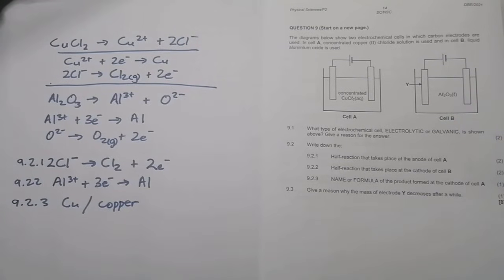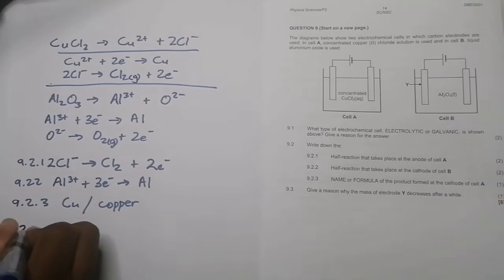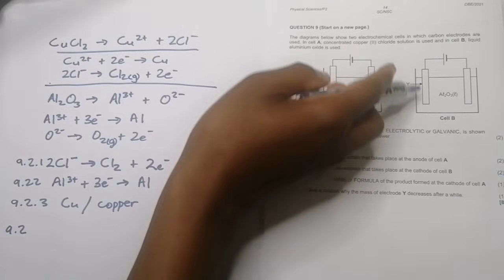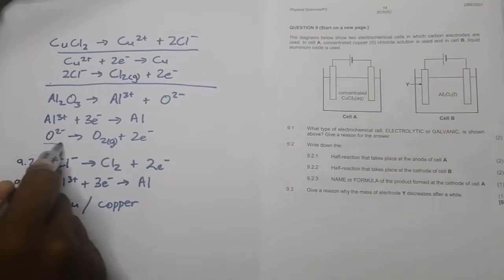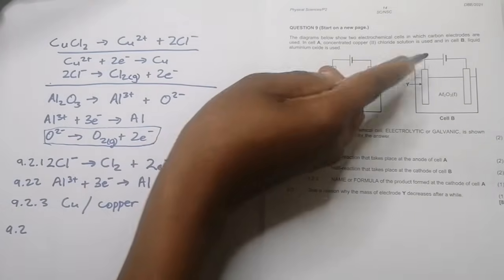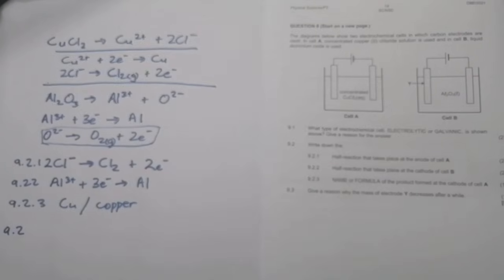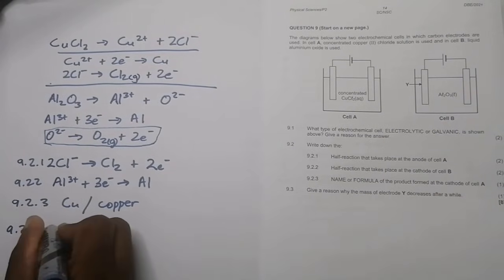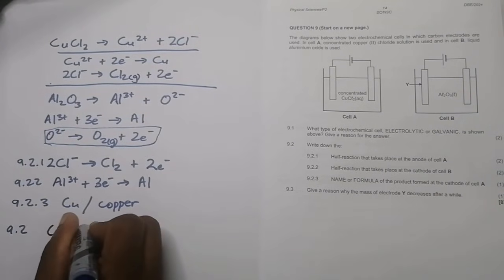They say give a reason why the mass of electrode Y decreases after a while. Now I want you to please note at electrode Y what's actually happening on the positive side. This is where we said we are forming oxygen. So what actually happens is, remember it's a carbon electrode, so what actually happens is that carbon now begins to react with oxygen.